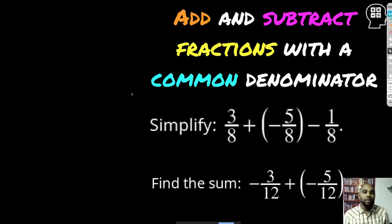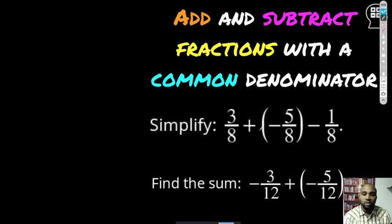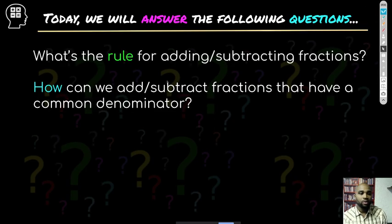Brandon Clayton, the Algebra Guy, here. I wanted to talk to you today about a very important topic: adding and subtracting fractions with common denominators. As you see on your screen, these particular expressions have a common denominator. The denominator is in the bottom of the fraction. For instance, these have eight while the ones on the bottom have 12. If this looks confusing now, it won't be in a few minutes, so stick along.